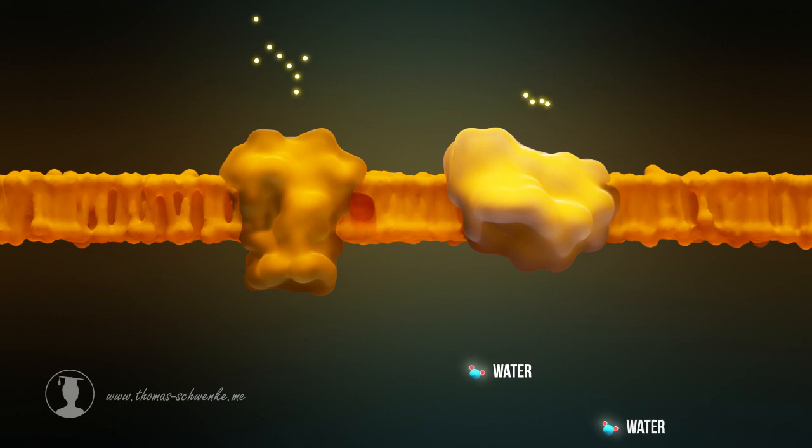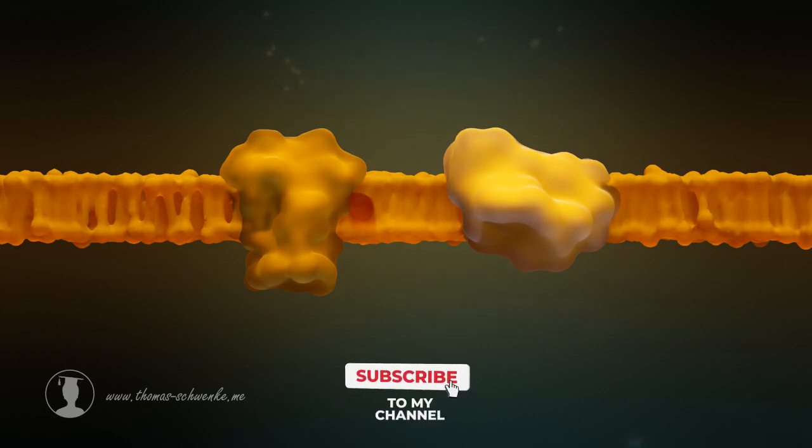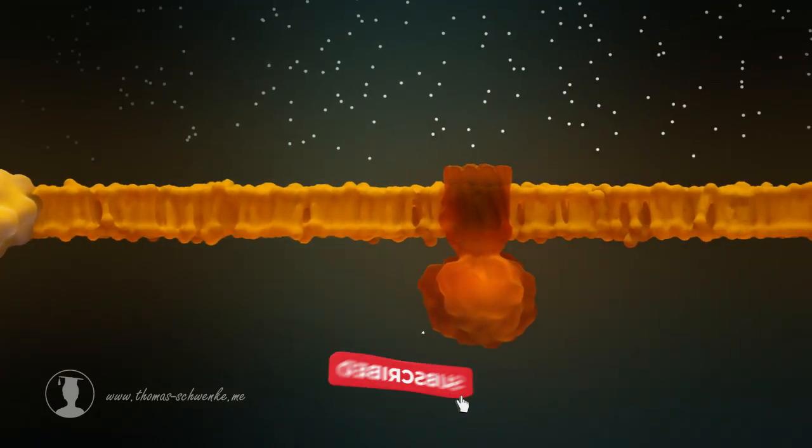In addition, four of the eight protons are pumped from the matrix space into the intermembrane space. In the next step, the production of the energy carrier ATP begins.